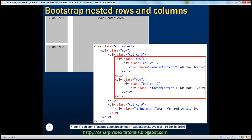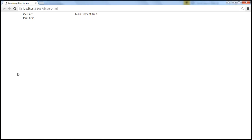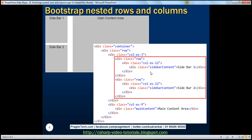And here is our second nested row. Within this nested row we have another column which is 12 logical units wide, and this is the column for sidebar 2. I have the same exact HTML already typed within index.html. When we view this page in the browser this is how it looks — that's basically because we have not created these two style classes yet: sidebar content and main content. Let's do that now — let's flip to Visual Studio.